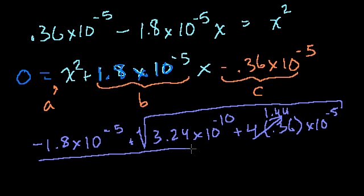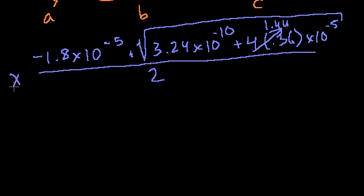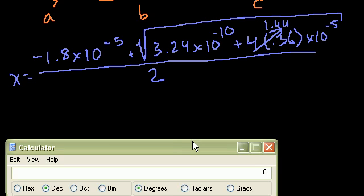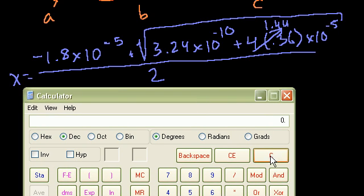And of course, all of this is over 2a. 2. So let's see. And these are going to be our. This is my x value. My concentration of OH. So let's see. I have 3.24 times 10 to the minus 10. That's that.